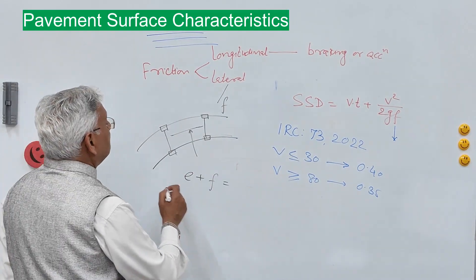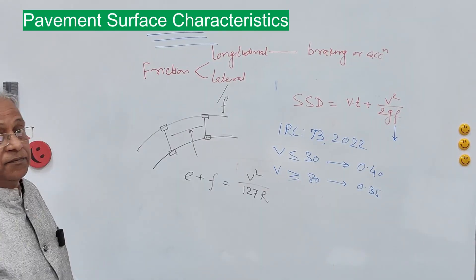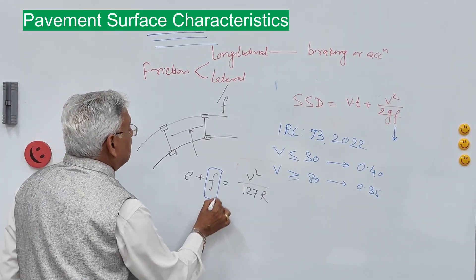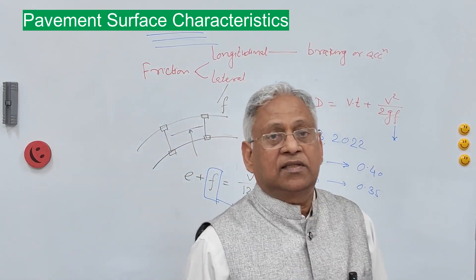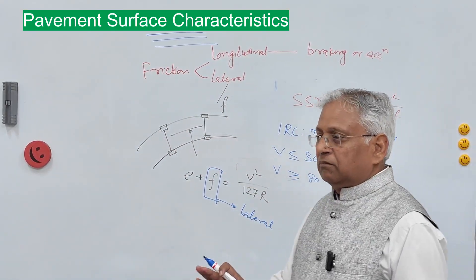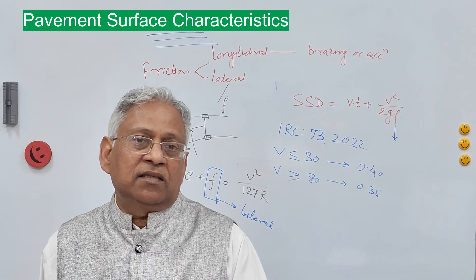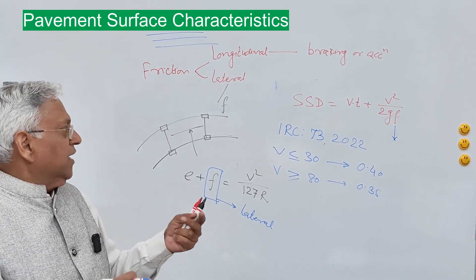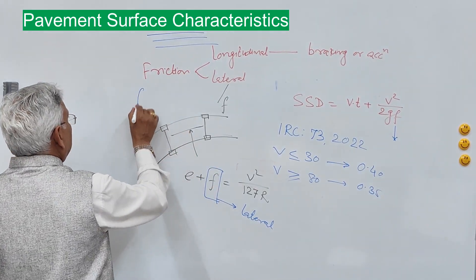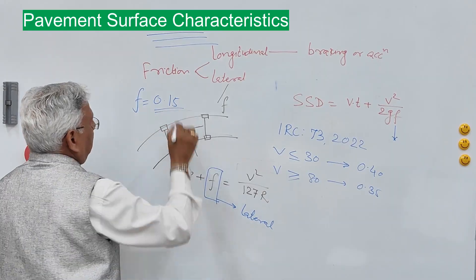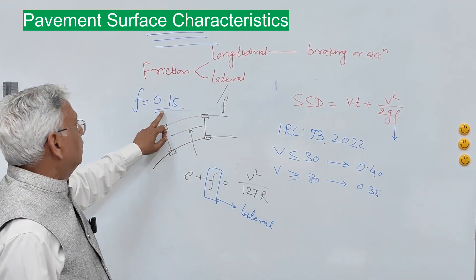The equation to calculate super elevation is: e + f = v² / (127R), where f is the lateral friction between the tire and the pavement surface. In a very extreme condition, lateral friction can be as low as 0.2 on a completely muddy pavement. Applying a factor of safety of 1.33, it becomes 0.15. So in most calculations, lateral friction is taken as 0.15, compared to 0.35–0.4 in the longitudinal direction.